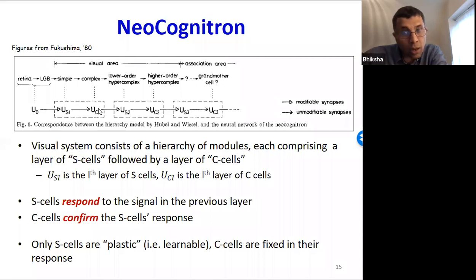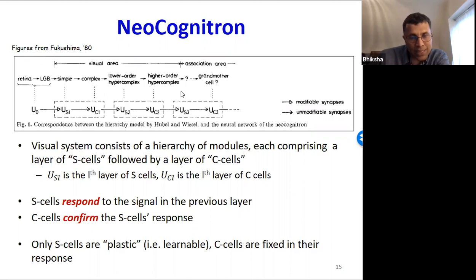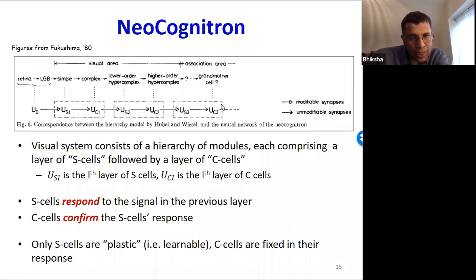The input comes in from the retina — that is the image itself. It's processed by the S layer in the first block, the C layer operates on the S layer, then the S layer of the second block operates on the output of the first block's C layer, and so on. A key aspect of this model: only the S cells are plastic — meaning only they can learn. The C cells are fixed in their response and not learned.